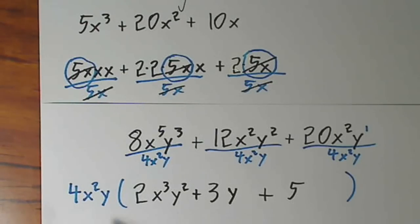And again, whenever you do this, you should check it. If I send 4x squared y back in to each term, I will get my original polynomial. I've preserved the value, but I've written it in a simpler form.